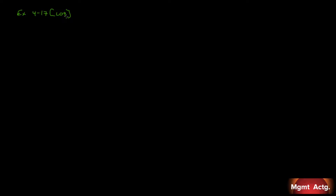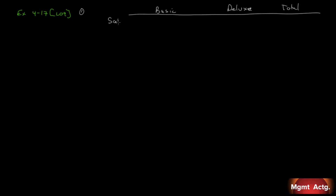Required number one: prepare a contribution format income statement for the company as a whole. We have two products, basic and deluxe. For sales, basic is $600,000 and deluxe is $400,000, totaling $1,000,000. For variable costs, we use the contribution margin ratio. Calling sales 100%, the contribution margin ratio is 60%, so variable costs must be 40%. 40% of $600,000 is $240,000.